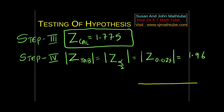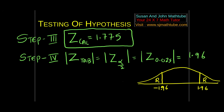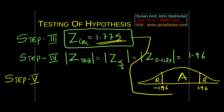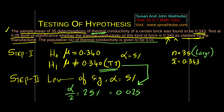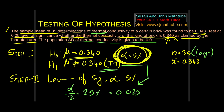Draw the rough graph — since it is two-tailed, mark 1.96 on both sides. On the left it will be negative. Write 'reject' on the tails and 'accept' in the remaining portion. Step number 5: calculated value 1.775 falls in the acceptance region. So accept H₀ — we are 95% confident the manufacturer's claim is correct.